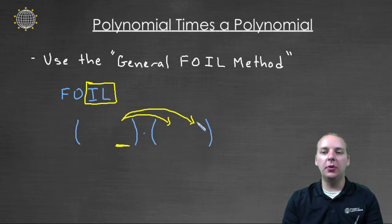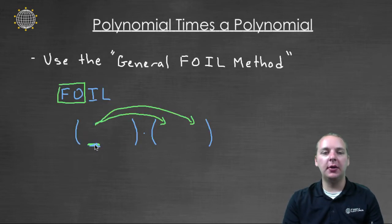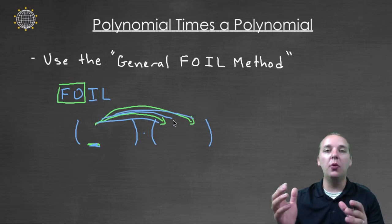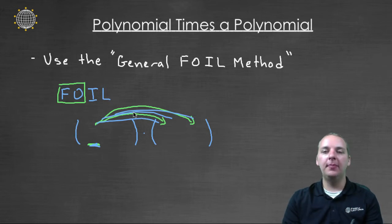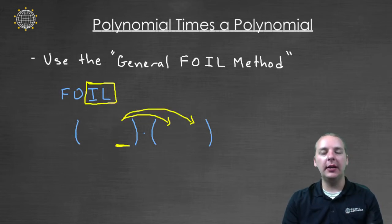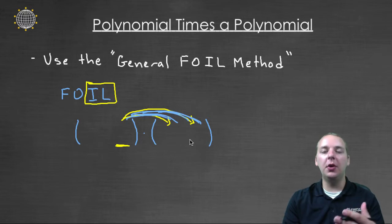Basically what we'll do is we'll actually take the first term here and distribute it to everybody, even if you had more terms in the second polynomial. And then when you're done, then you'll slide to the right, and then we'll distribute the second term times everybody in the next polynomial. And then if you have more terms, then you just keep going.